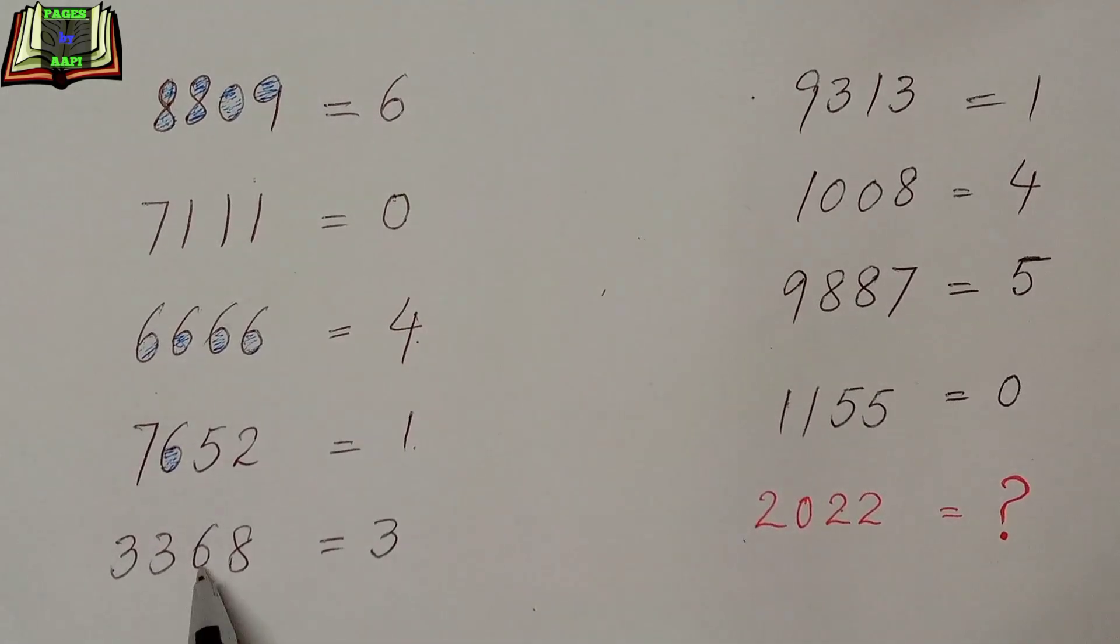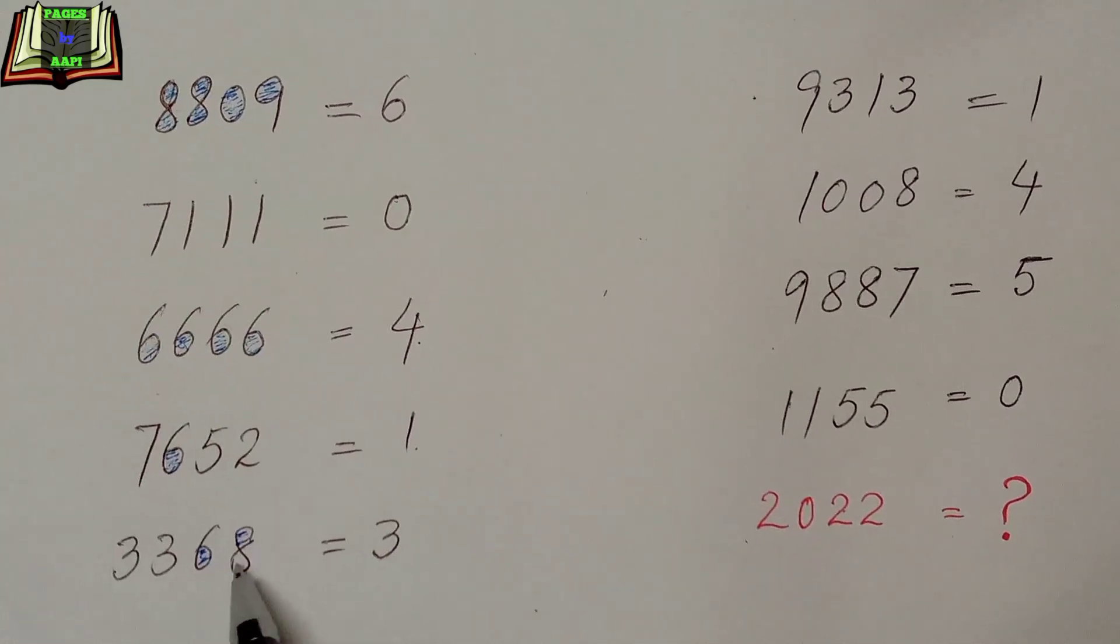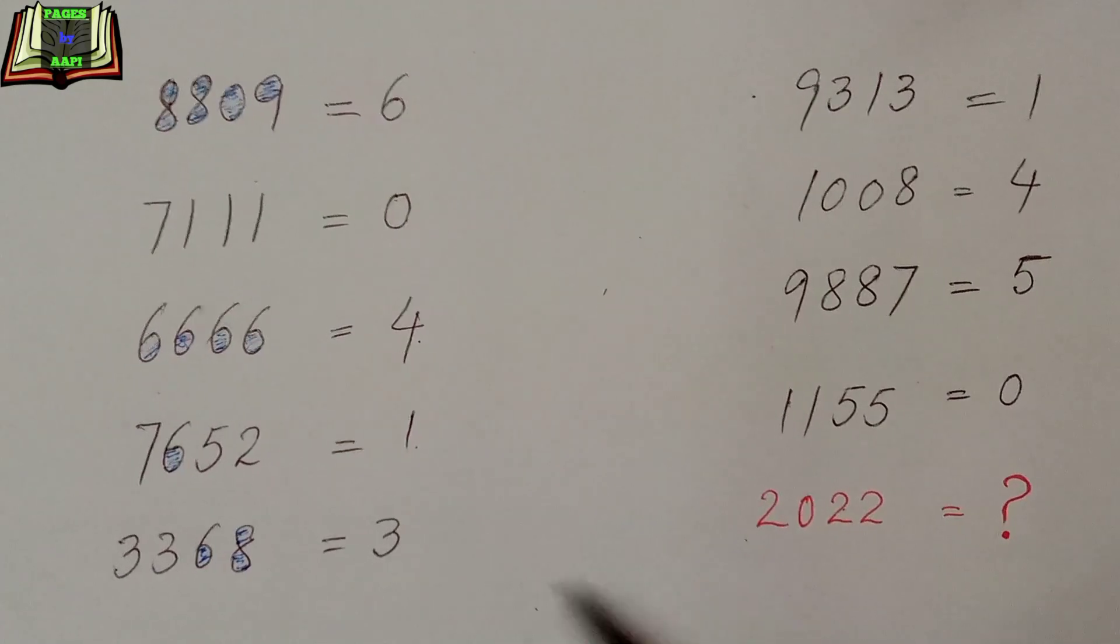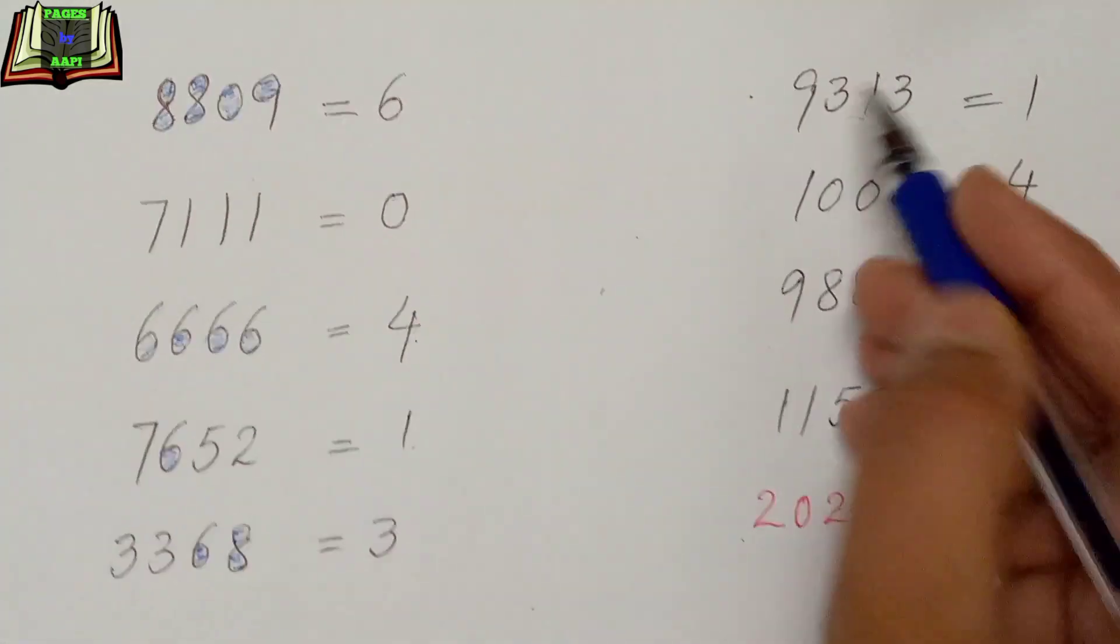In the next number 7652, there is only one circle, that is why it's equal to 1. In the next number 3368, there are 3 circles, so that is why it's equal to 3.